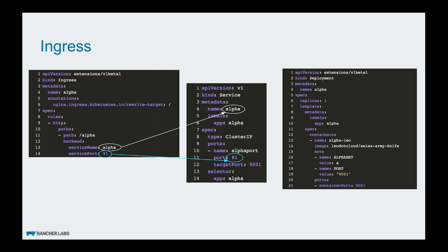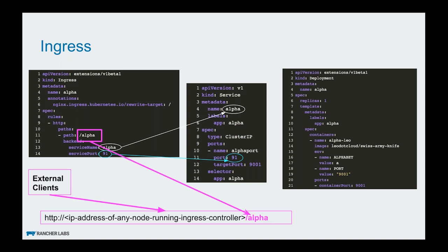Otherwise the user is left clueless. So we launched something called a default backend, which is like a catch-all entry for all the non-existing paths or incorrect domain virtual hosts that are not configured in the ingress. For example, here you can see this is the default backend — it uses this particular image.